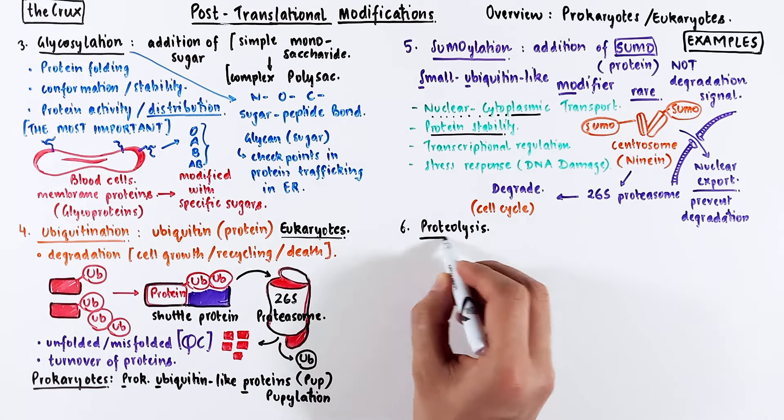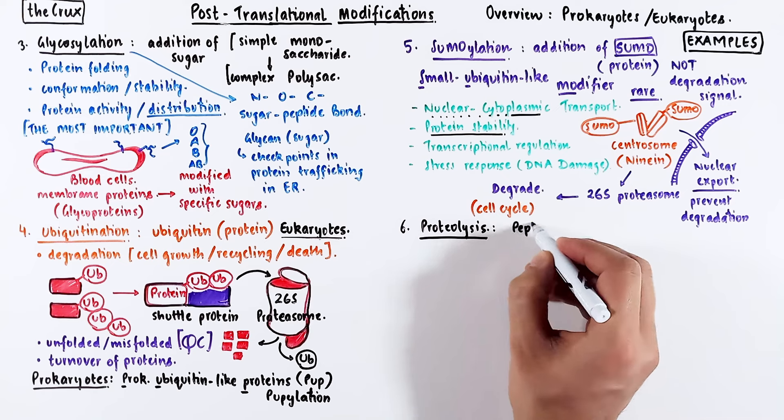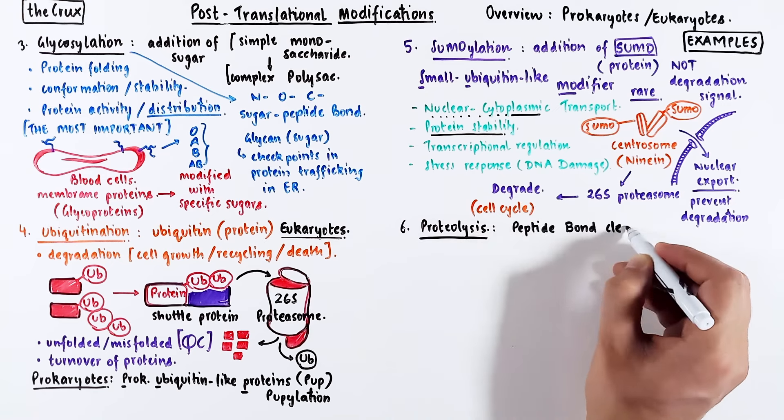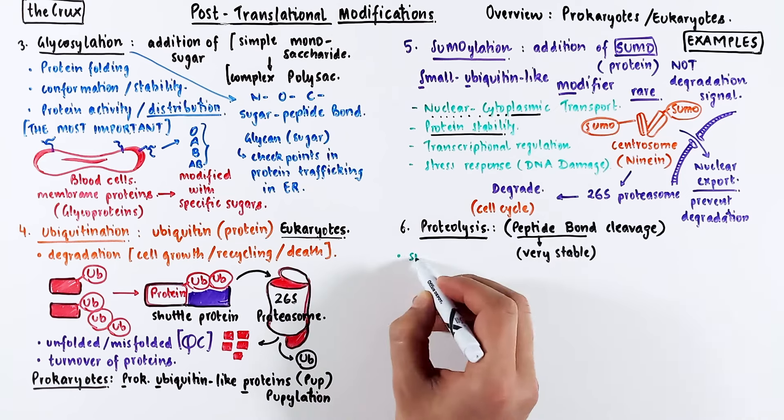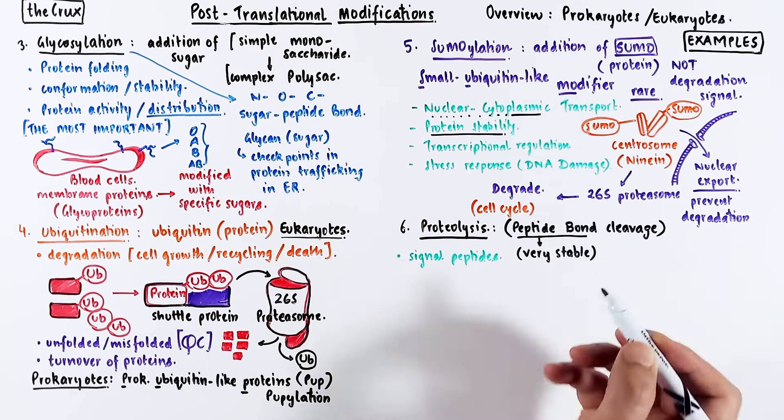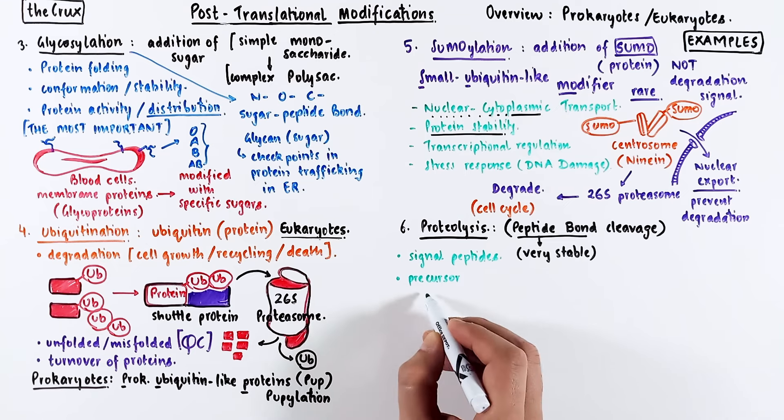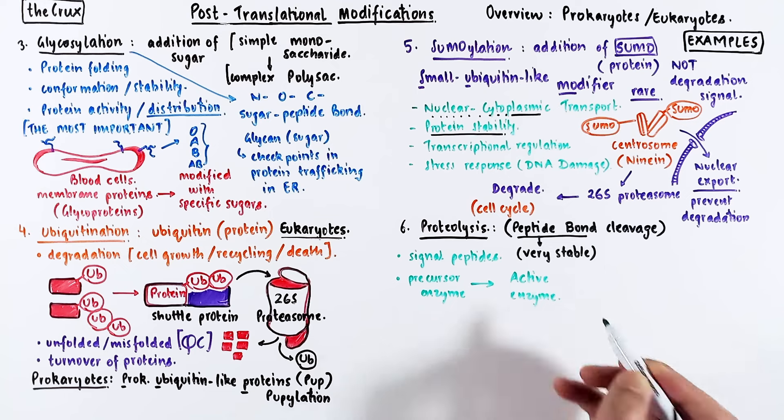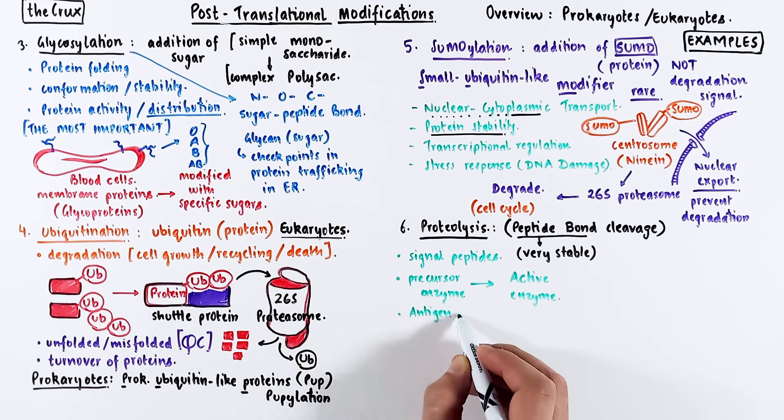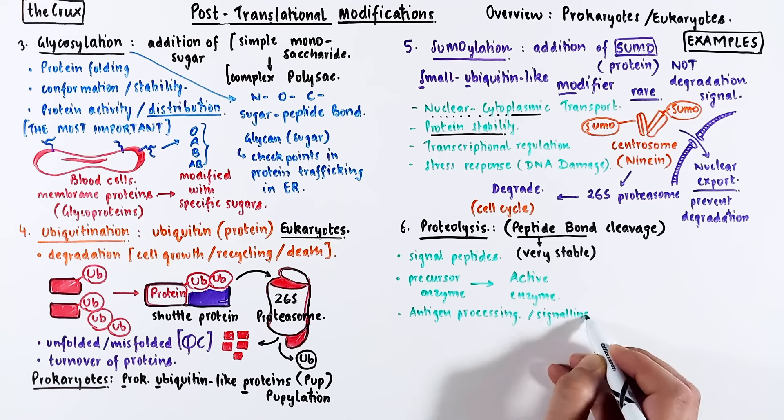The sixth modification is proteolysis, which is simply breaking these very stable peptide bonds in a protein. You need to break bonds to release signal peptides. Some precursor enzymes mature into active enzymes after cleaving a specific part. Antigen processing in the immune system and signaling pathways also sometimes require peptide bond cleavage.